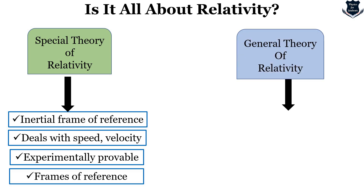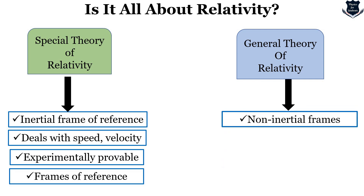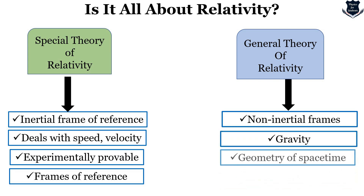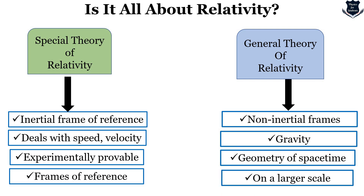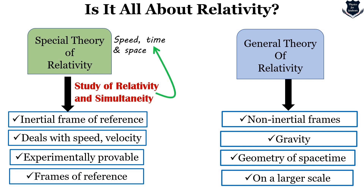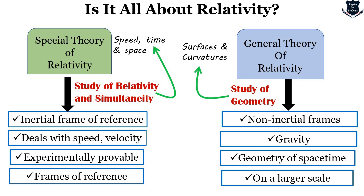But what is the inference we can draw from this? First let us look at what General Relativity actually deals with. It deals specifically with non-inertial frames of reference. When Einstein's equivalence principle came into the picture, we are now dealing with non-inertial frames of reference. The main central idea is gravity. General Relativity is basically the geometry of spacetime and is applicable on a cosmological scale. Special Theory of Relativity deals with simultaneity — speed, time, space — so the relativistic approach is more predominant there. General Relativity, on the other hand, is mostly the study of geometry: surfaces, curvatures, manifolds, intrinsic curvature, extrinsic curvature, and more.